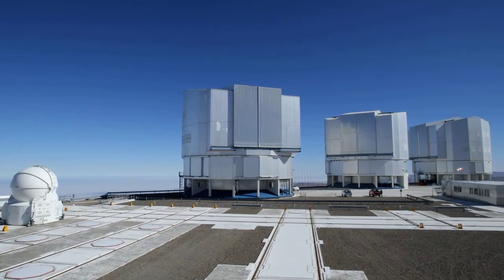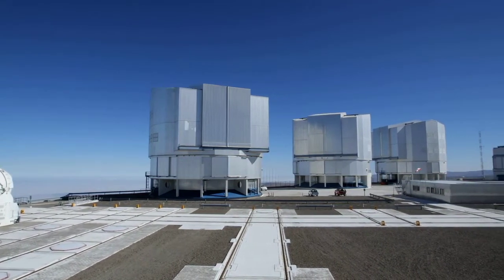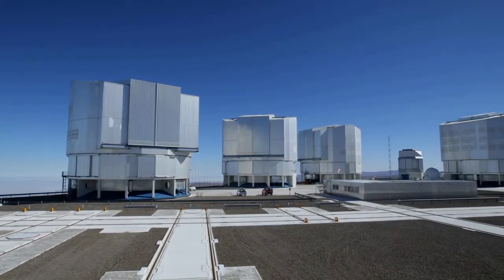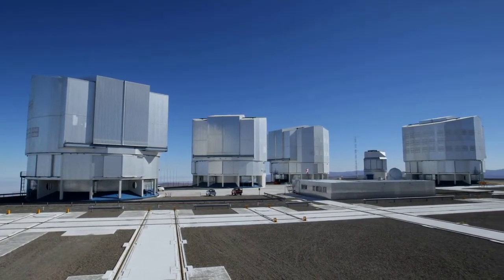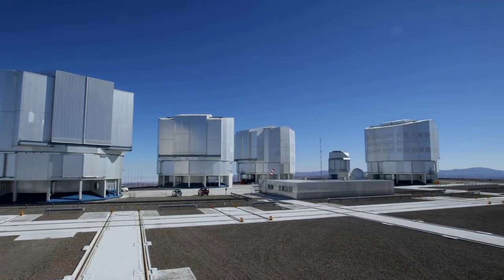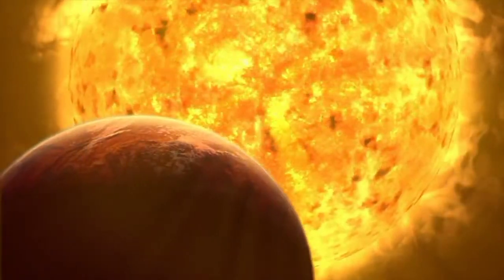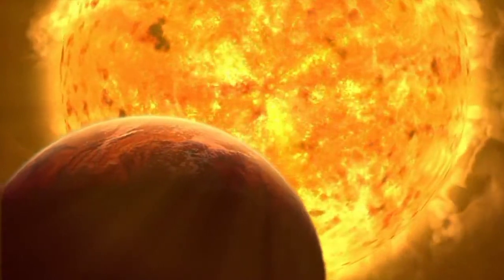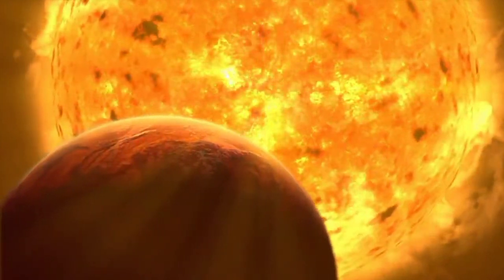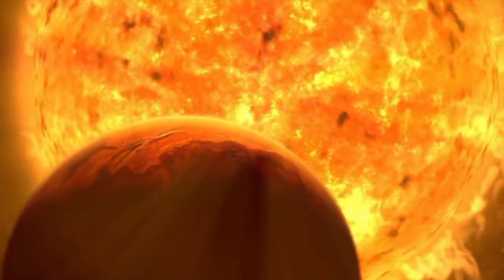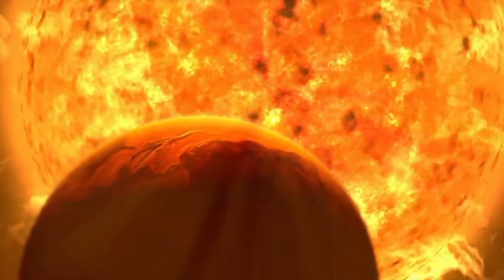All those observations confirmed that TOI-2109b is a rare and unusual planet. TOI-2109b's 16-hour orbital period is the shortest ever measured for a gas giant planet. The planet is about five times more massive than our own Jupiter.